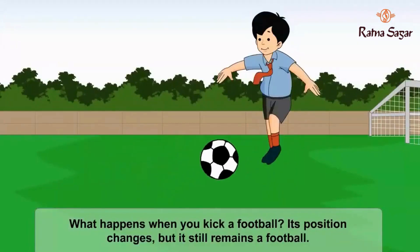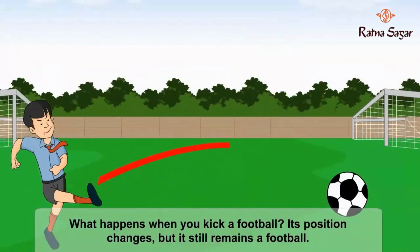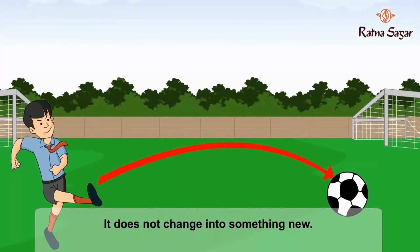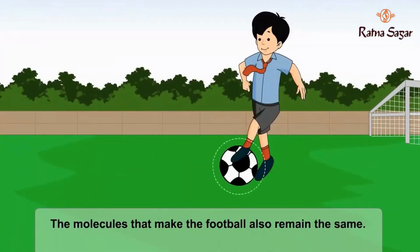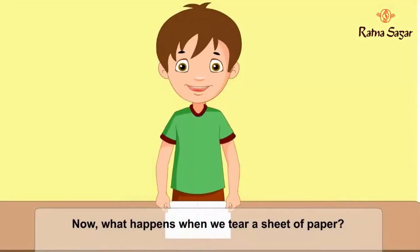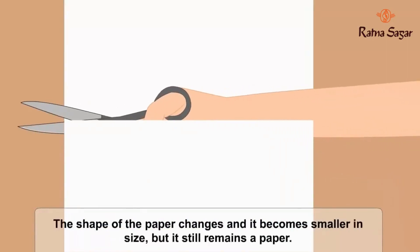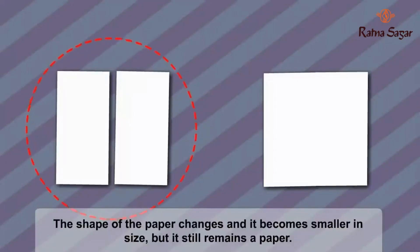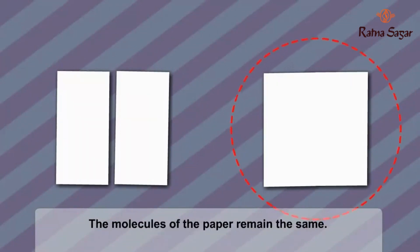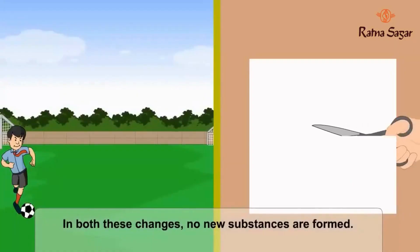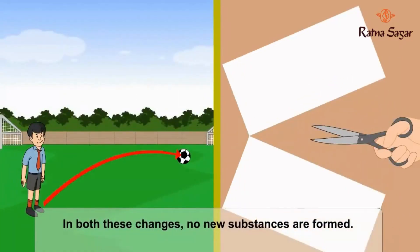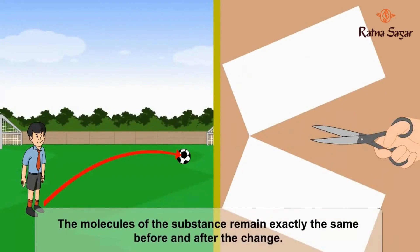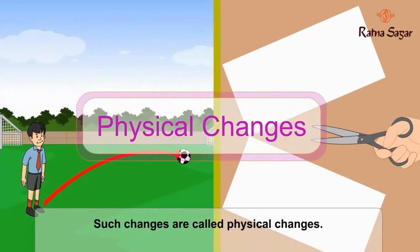What happens when you kick a football? Its position changes, but it still remains a football. It does not change into something new. The molecules that make the football also remain the same. Now, what happens when we tear a sheet of paper? The shape of the paper changes and it becomes smaller in size, but it still remains a paper. The molecules of the paper remain the same. In both these changes, no new substances are formed. The molecules of the substance remain exactly the same before and after the change. Such changes are called physical changes.